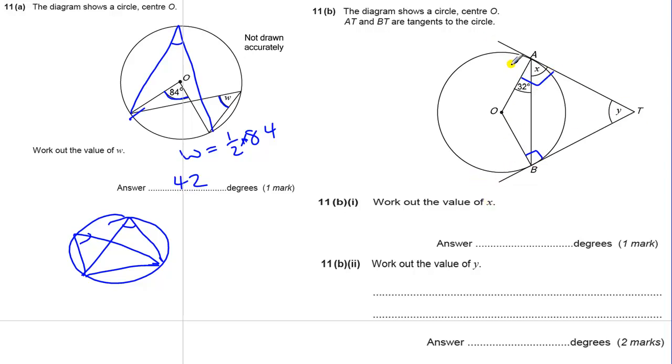Also, when we have two tangents, when they meet a point, the distance between the point where they meet and the point where they touch the circle, that distance there is the same as this distance here.